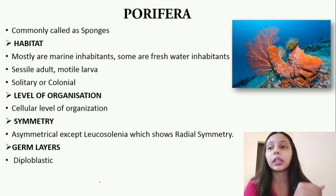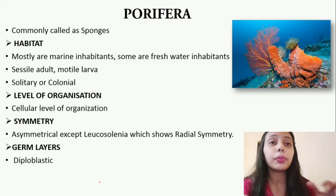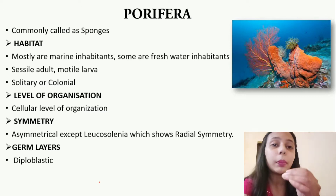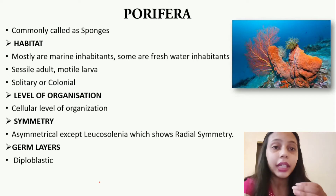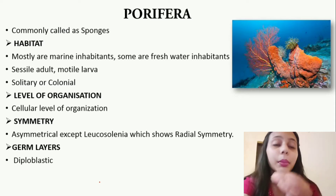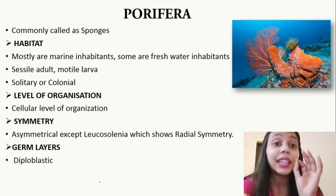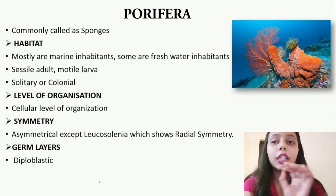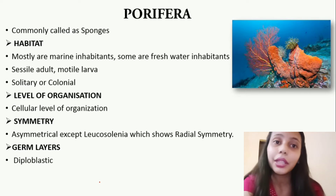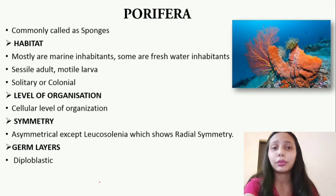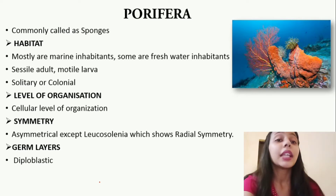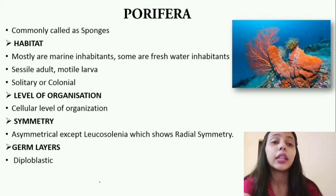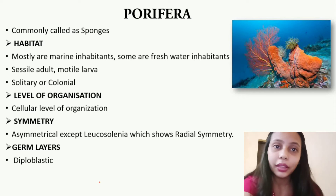Symmetry की बात करें तो इनकी पूरी body asymmetrical है। आप diagram देख सकते हैं — इनकी body में एक भी ऐसा plane नहीं है जिसको cut करने से body symmetrically equal halves में divide हो सके। Except Leucosolenia जो radial symmetry show करता है। यानि मैं कह सकती हूं कि Leucosolenia Porifera का last animal है, क्योंकि इसके बाद Coelenterates यानि radial symmetry वाले animals start हो जाते हैं।